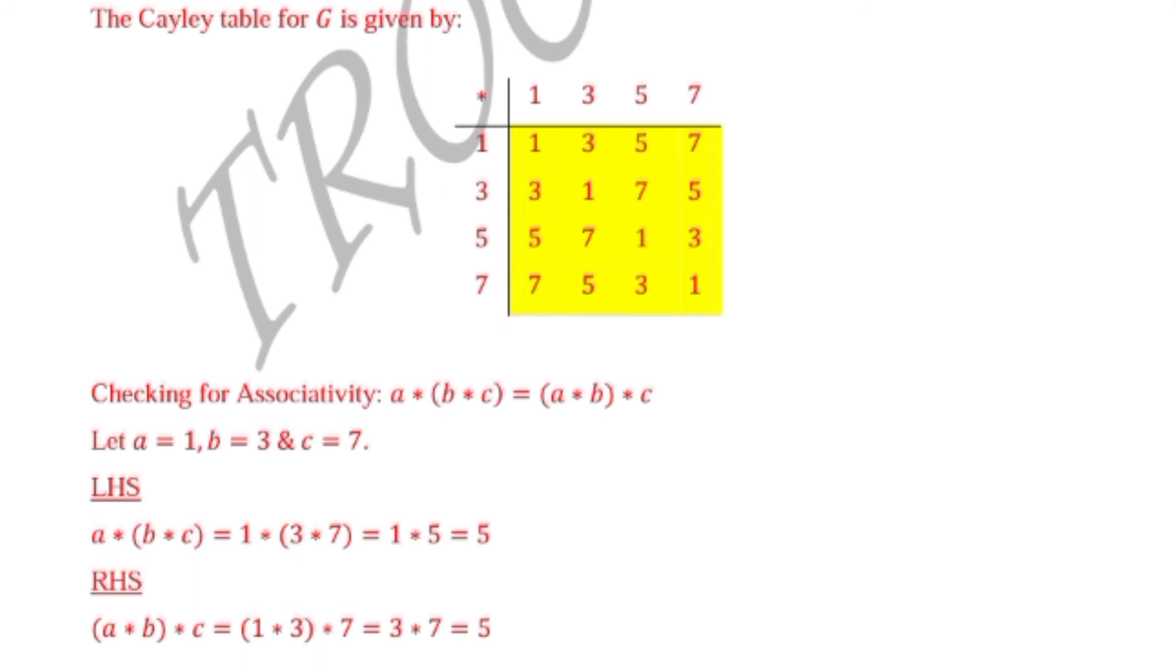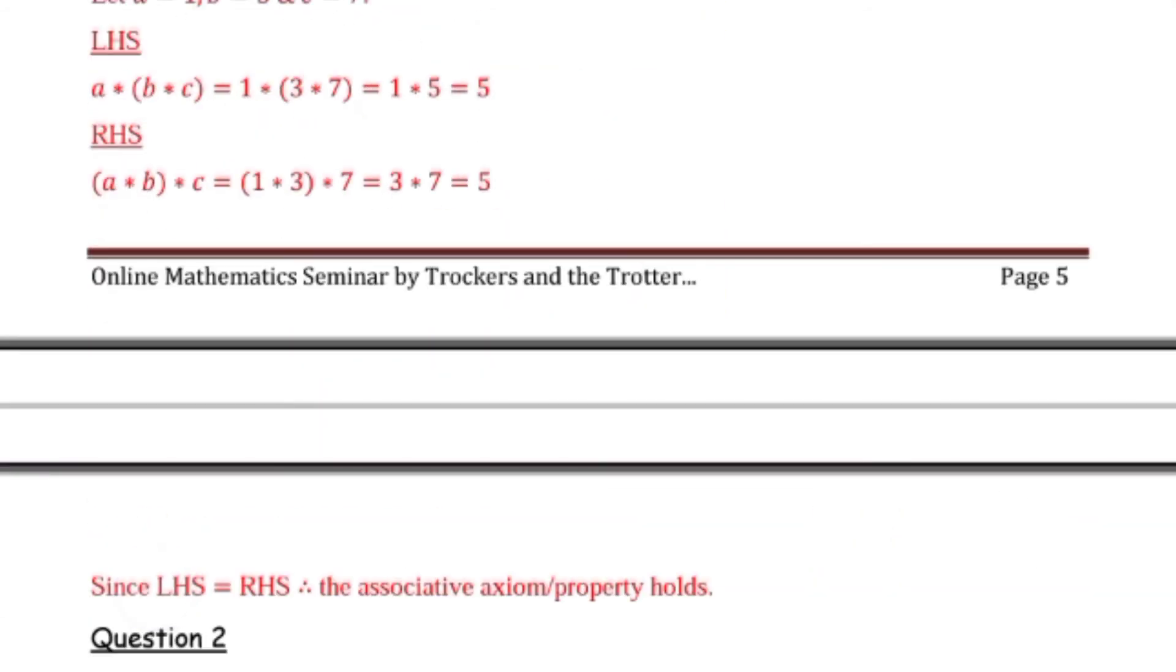We've obtained the same answer on both sides. Since left-hand side equals right-hand side, the associativity axiom holds. This is how you prove whether a set is associative under a certain binary operation.